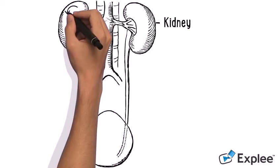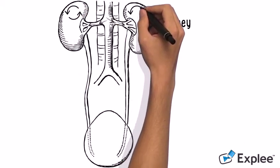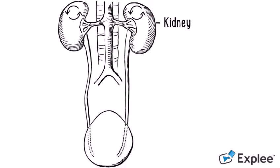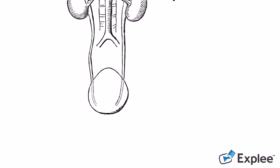Nephrons filter the blood, allowing only specific vitamins and minerals to be reabsorbed into the bloodstream while the rest becomes waste.